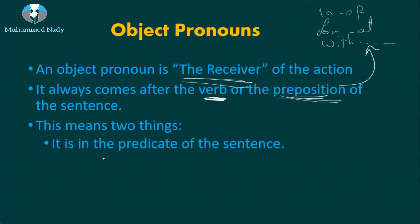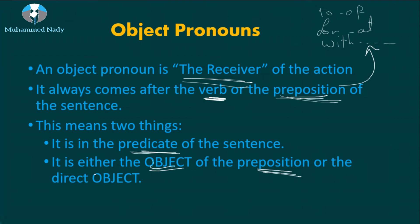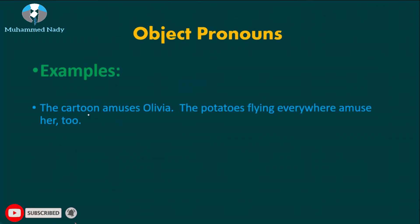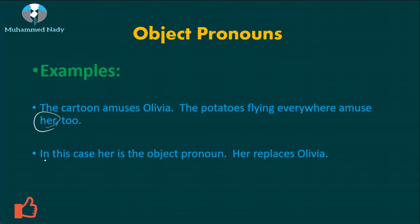The object pronoun could be the predicate of the sentence. There is a video linked above that explains subjects and predicates. The object pronoun is either the object of the preposition or the direct object of the verb. For example: 'The cartoon amuses Olivia. The potatoes flying everywhere amuse her too.' The object pronoun is 'her' — it comes after the verb and replaces 'Olivia.'